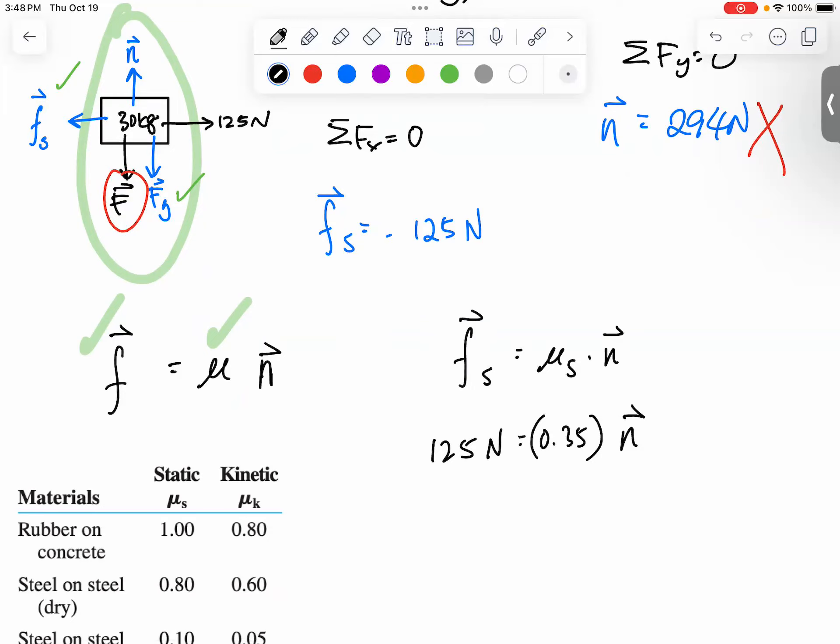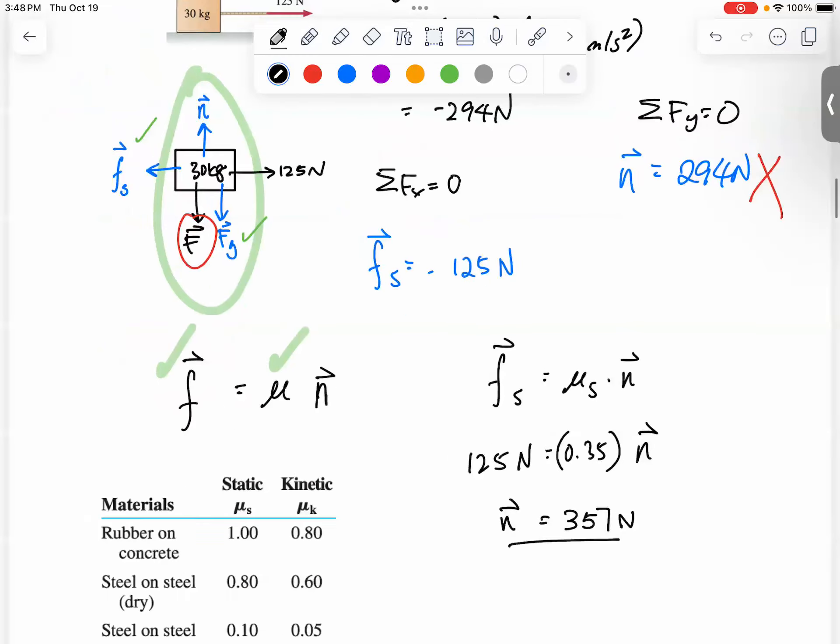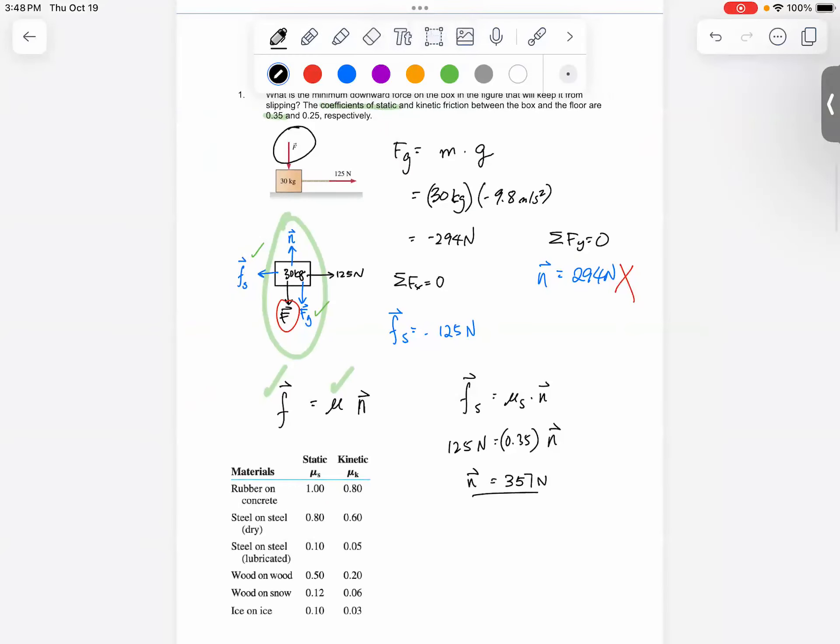Now I manually drop the negative because the normal force that we are going to calculate, it's going to be an upward direction. So if you keep the negative sign, that doesn't really make much sense, so we can just go ahead and drop it. So if you do that, you should find your normal force being 357 newtons. Okay, so far so good.